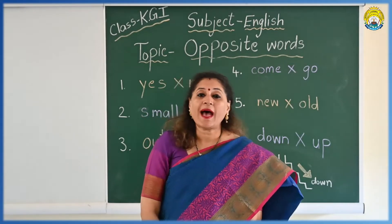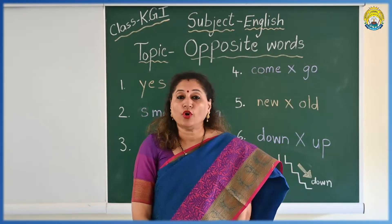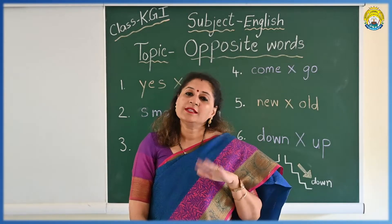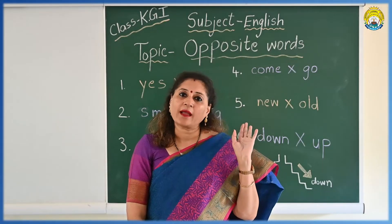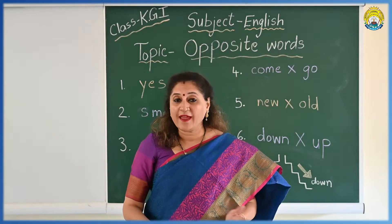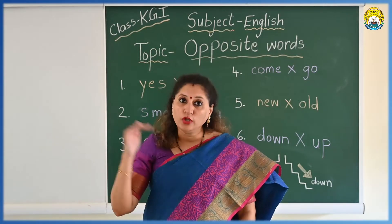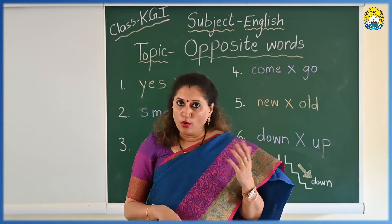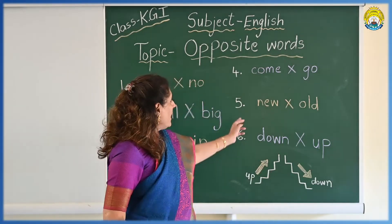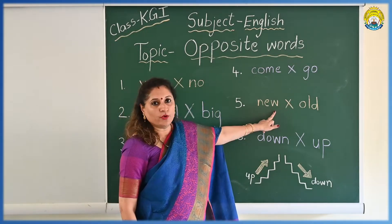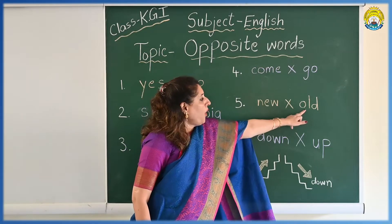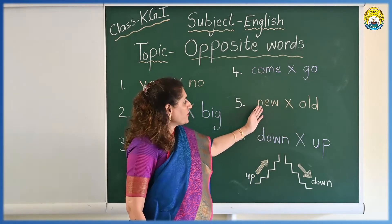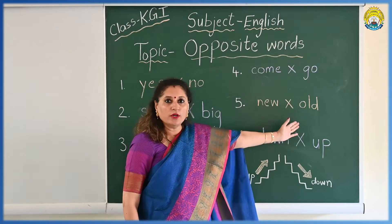You must be having a car at home. Suppose the car is very old — ten years back — so it is the old car. And then you sold that car and bought a new car, so the car is new. Old, new. N, E, W — new. O, L, D — old. Opposite of new is old.